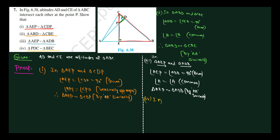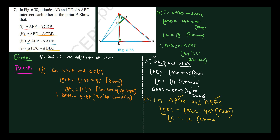In triangle PDC and triangle BEC, angle PDC equals angle BEC equals 90 degrees — this is given. And angle C equals angle C — this is common for both triangles. Therefore triangle PDC is similar to triangle BEC by angle-angle similarity.